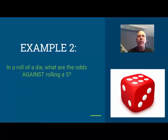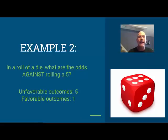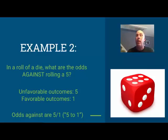Example two: rolling a die, what are the odds against rolling a five? For odds against I want unfavorable over favorable. There are five sides I don't want to get and one good side, so the odds against rolling a five are five to one.